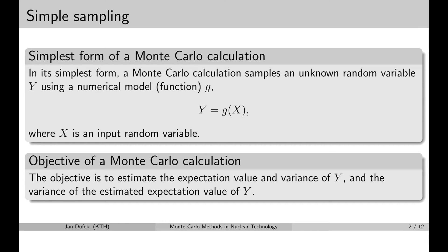Let me give you an example for the result of the Monte Carlo calculation and the input random variable. I could use the Monte Carlo simulation to estimate the distance fission neutrons fly to the first collision — from the site of the fission to the point where they collide the first time. We know that this distance is described by a probability density function, so we need one number to sample the actual value of this distance.